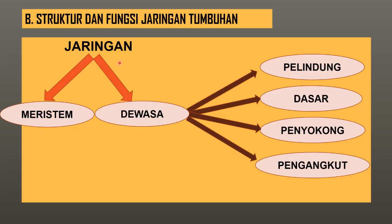Jaringan pada tumbuhan terdiri dari dua. Yang pertama jaringan meristem, dan yang kedua adalah jaringan dewasa. Jaringan dewasa ini dibagi lagi menjadi empat, yang terdiri dari jaringan pelindung, jaringan dasar, jaringan penyokong, dan jaringan pengangkut. Kita akan membahas satu persatu dari semua jenis jaringan ini.